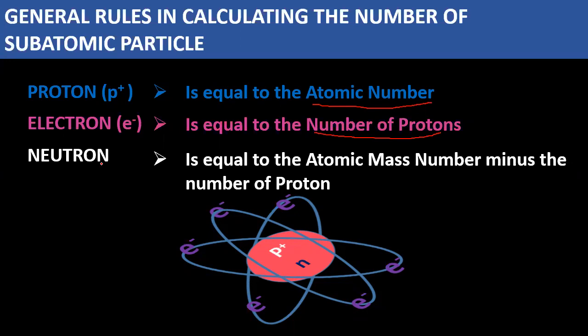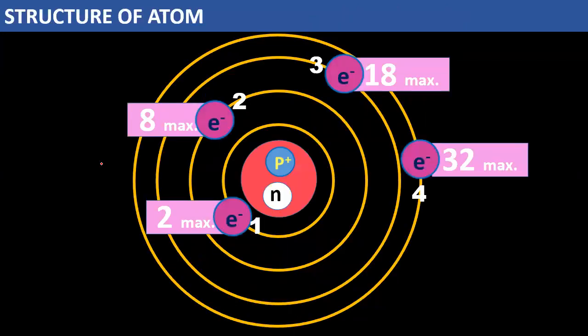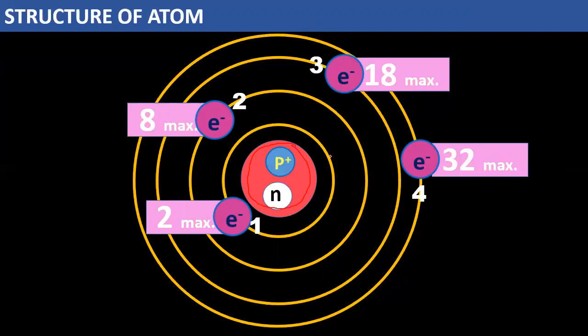Always remember this formula for how to get the protons, electrons, and neutrons. So let's start with a sample. The structure of an atom: remember, protons and neutrons are concentrated in the nucleus of the atom.